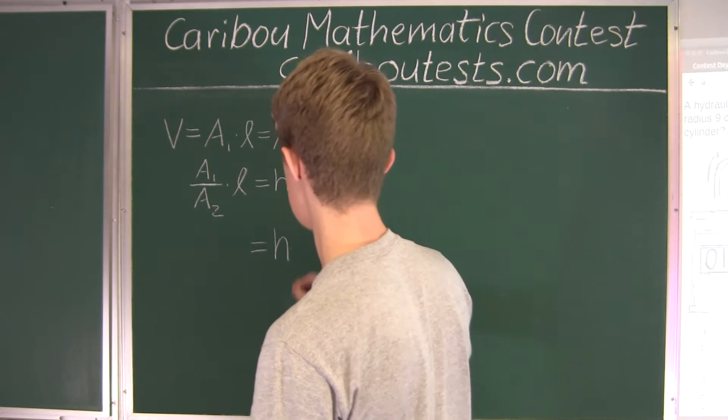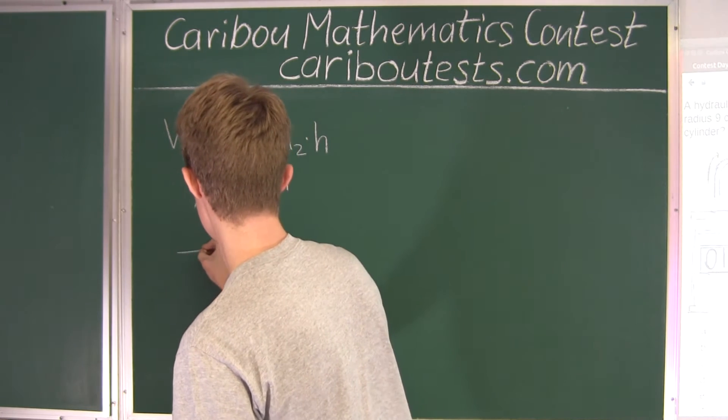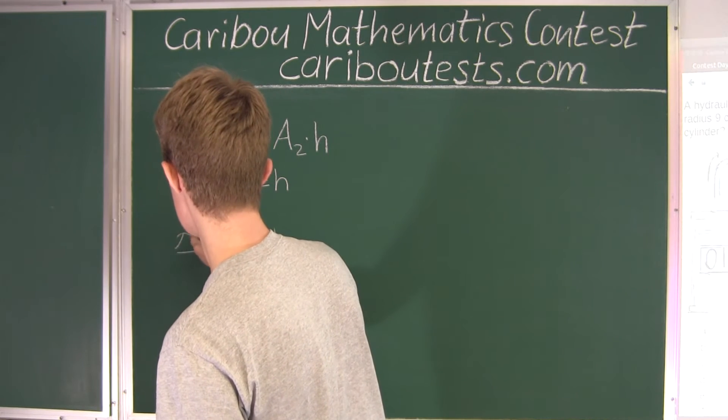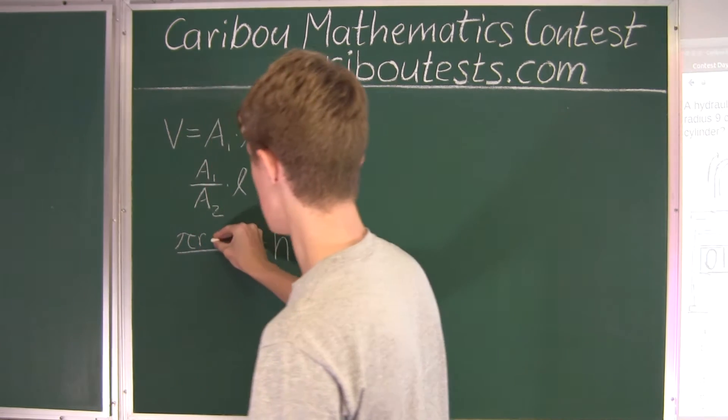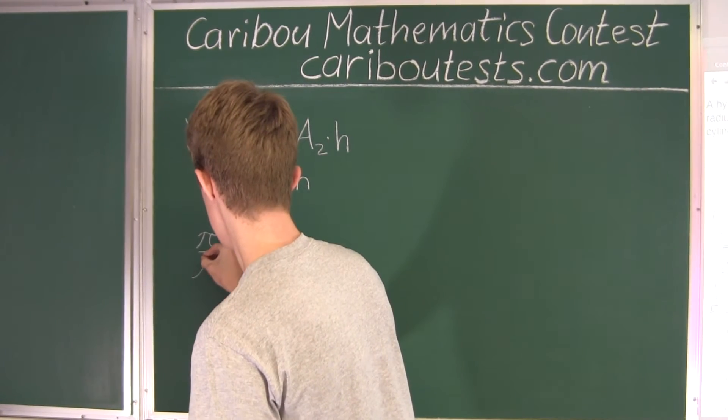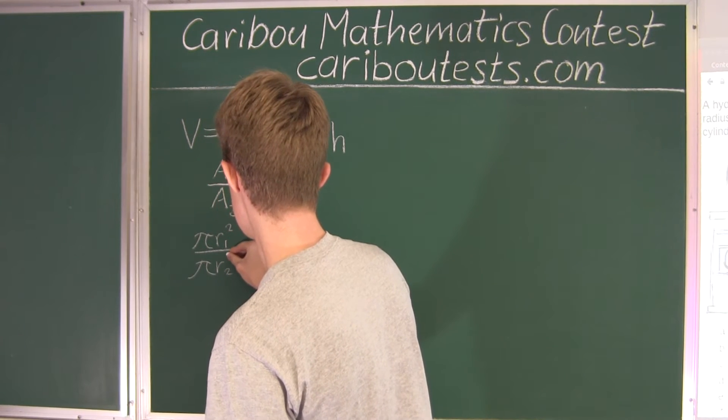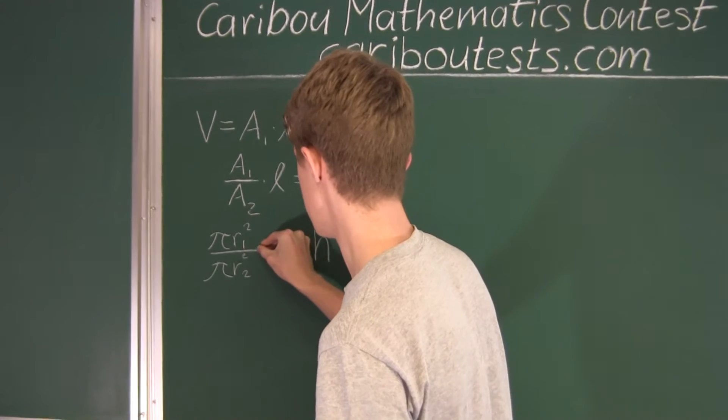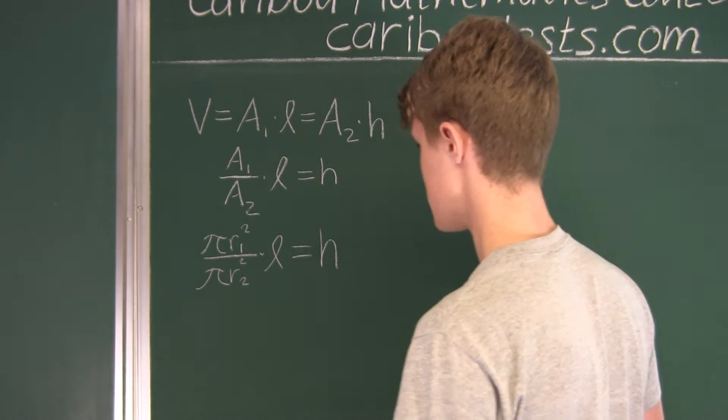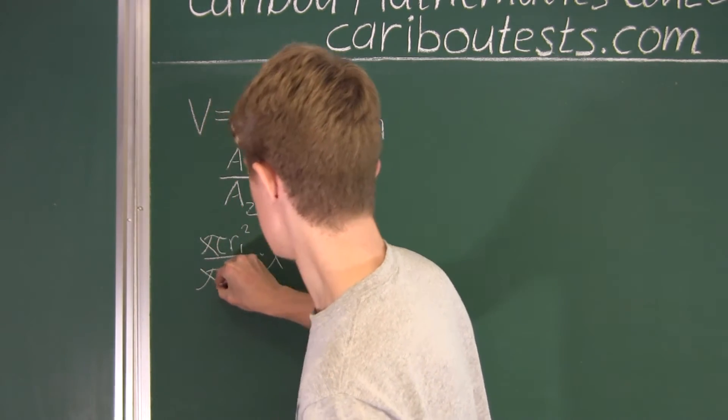So now again, we have is equal to H, and now for the area of the circle for the first cylinder, we have π times R₁ squared, which is over π times R₂ squared. And then, of course, that is multiplied by L. So here, of course, we can cancel π. So we have π and π.